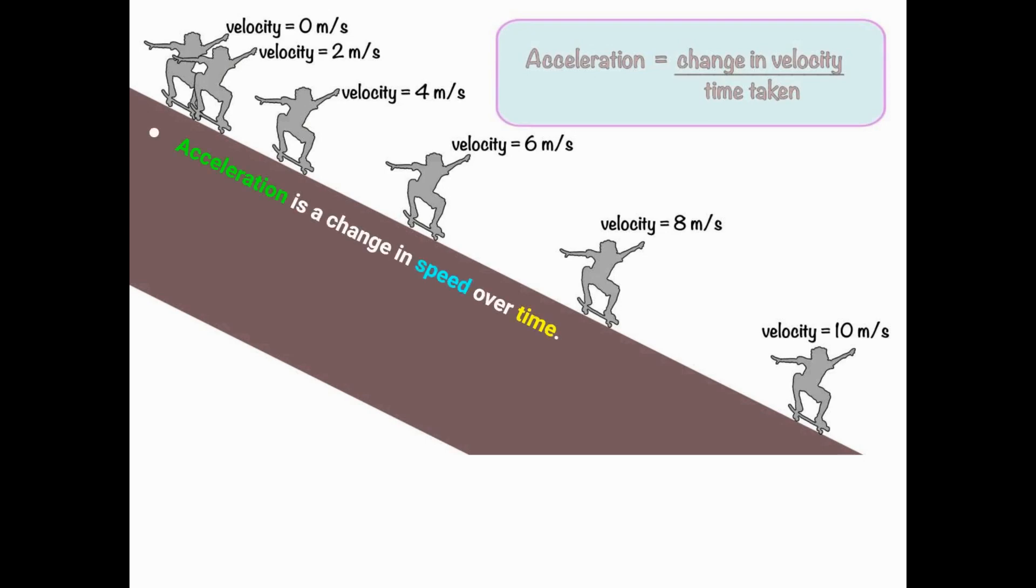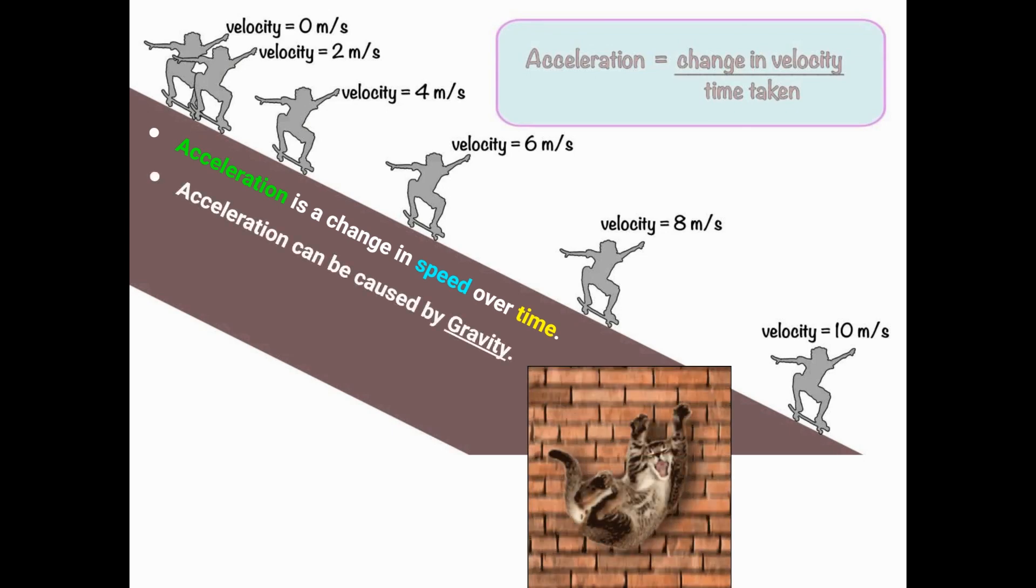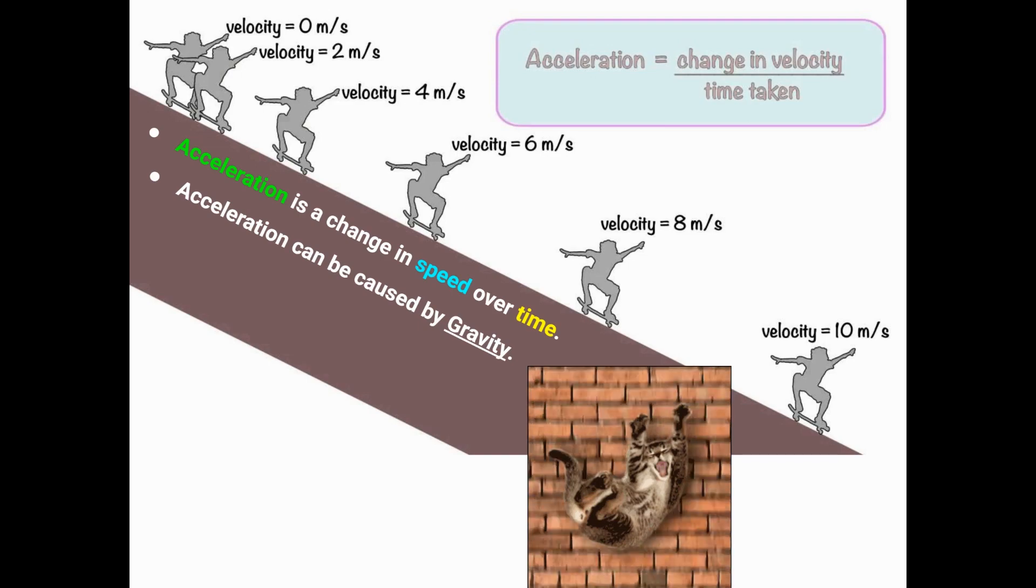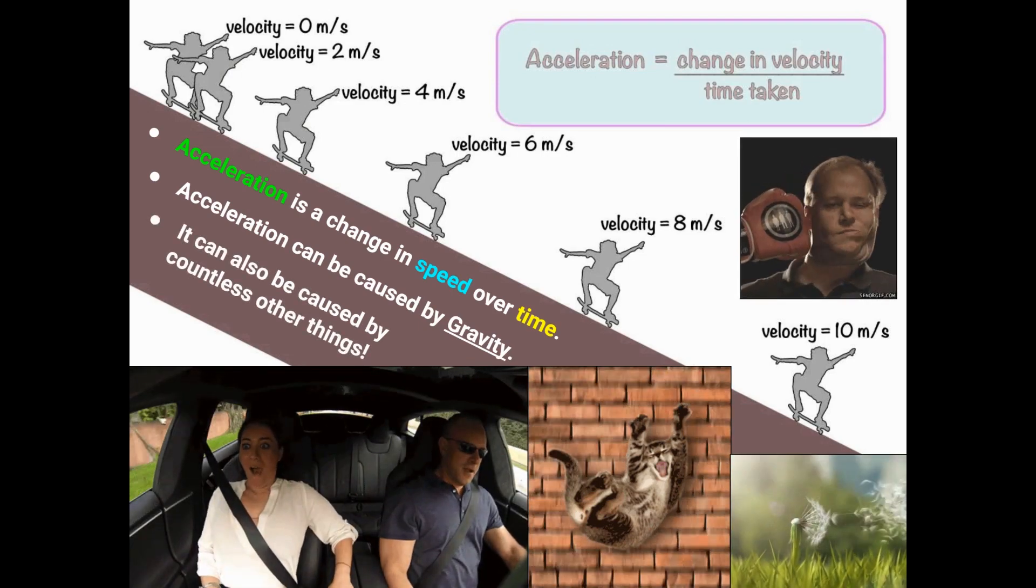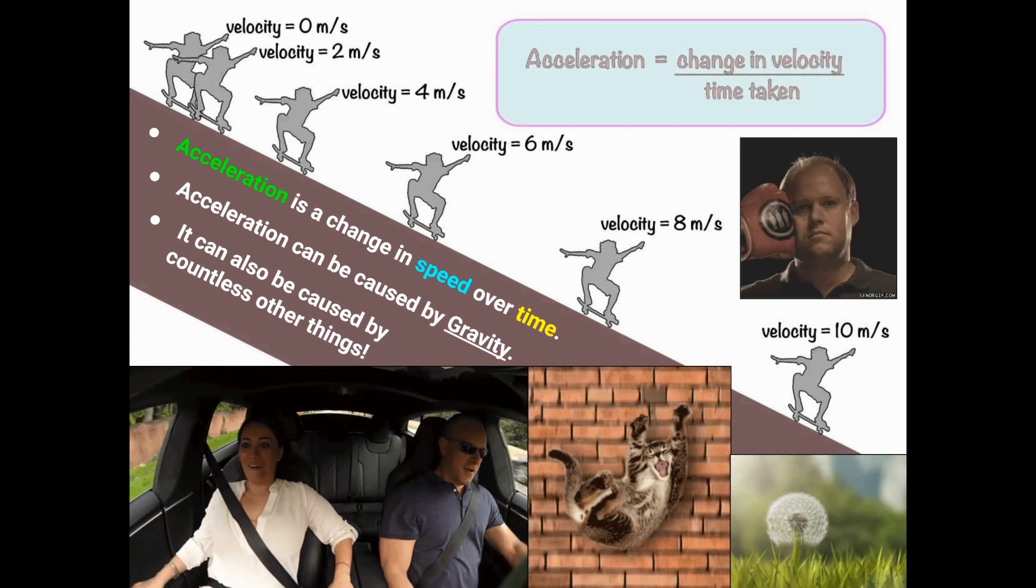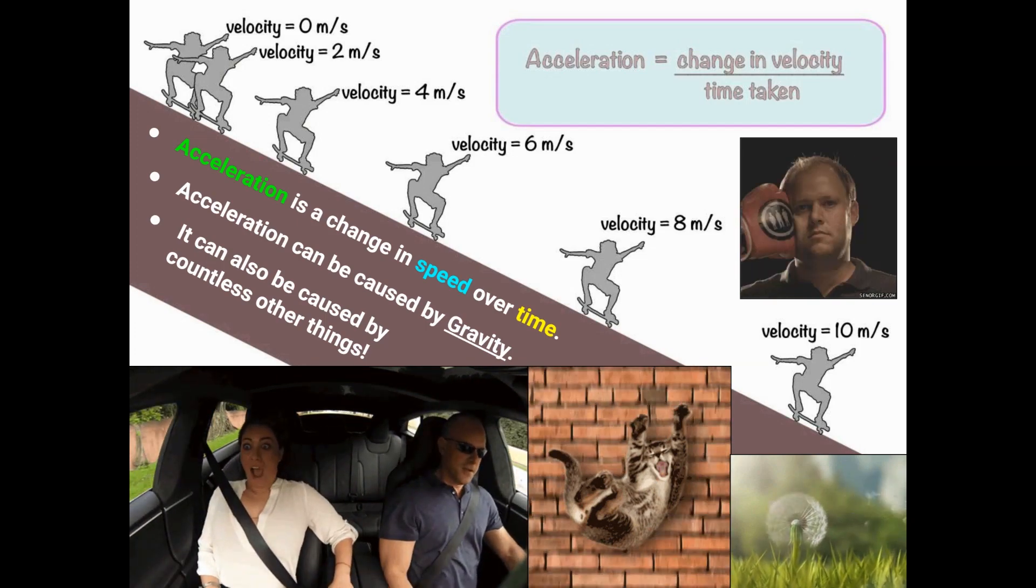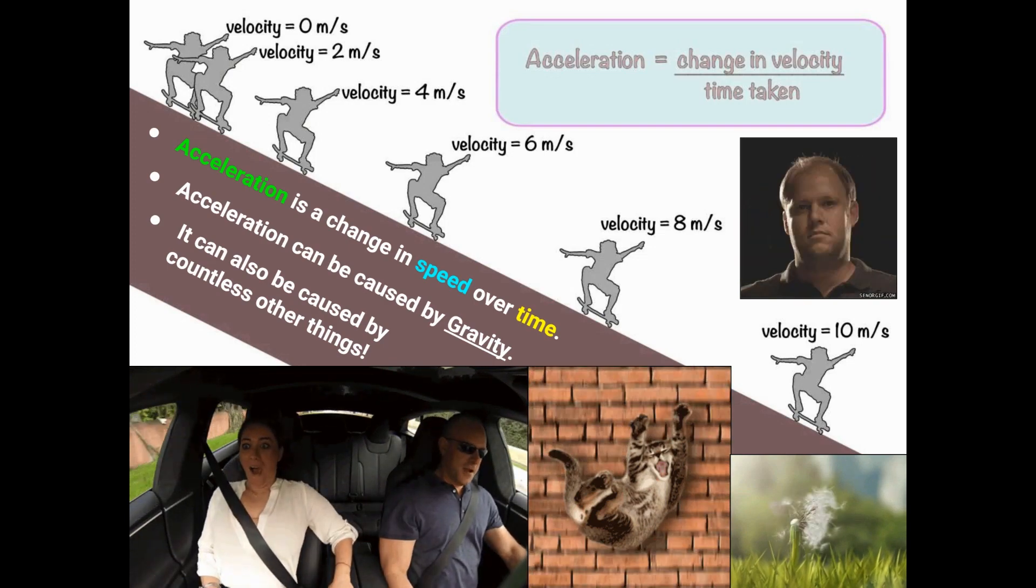Acceleration again is a change in speed or velocity as time goes on. It can be caused by things like gravity. If you drop something out of your hand, it's going to get faster and faster until it hits the ground. Driving in a car and feeling someone hit the accelerator, having the wind blow near you, or just having somebody punch you in the face, those are all examples of acceleration.